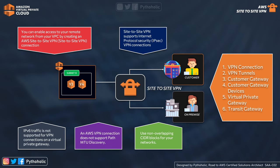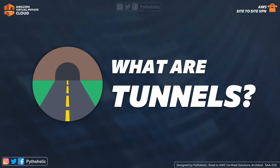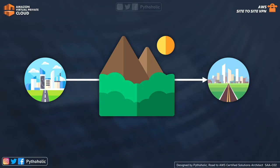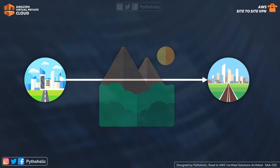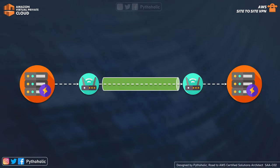Before moving on to VPN connections and tunnels, let's understand what tunnels are and why they are used so commonly in networking. When connecting two places with an obstruction in between, the suitable approach is to dig a tunnel through the hill or mountain creating the obstruction. In networking, tunneling helps the movement of data across networks, allowing private network communication over the public internet.